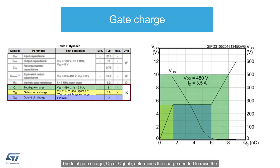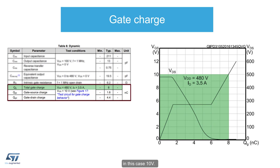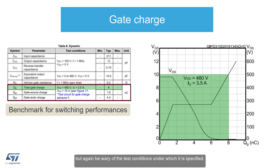The total gate charge, QG, or QGTOTE, determines the charge needed to raise the gate voltage from zero to typically the recommended driving voltage of the MOSFET, in this case 10 volts. QG is also often used as a benchmark for switching performance between devices, but again, be wary of the test conditions under which it is specified.